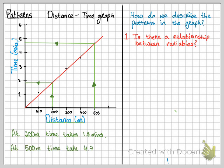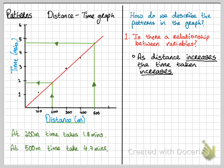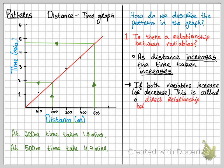So at 500 meters, time takes 4.7 minutes. So initially at a lower distance, the time takes less. At a higher distance, the time takes more. So as distance increases, the time taken increases. If both variables increase or both decrease, this is called a direct relationship between variables, also known as they are directly proportional.